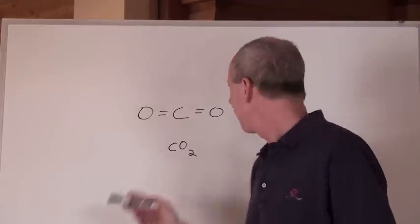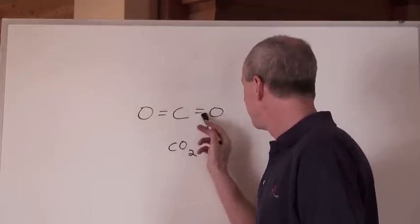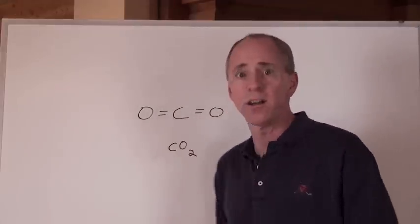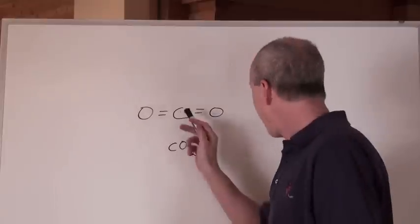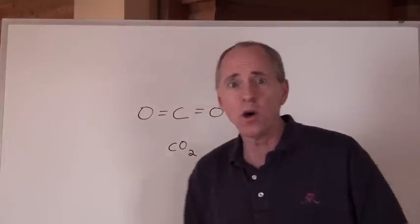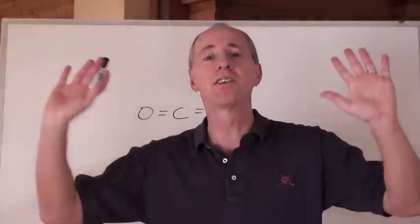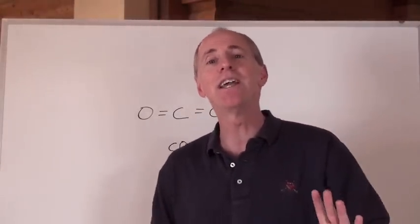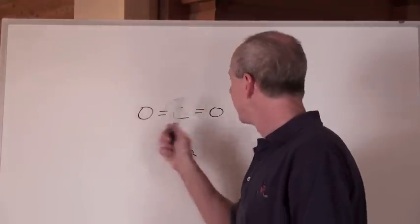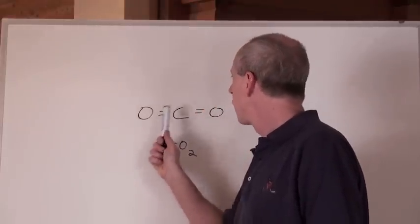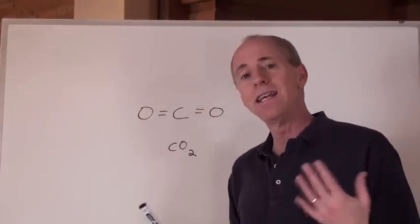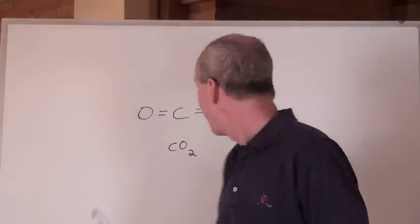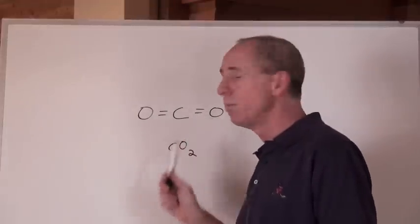How come it's bonded like that? Why don't you put two lines in between? Is that two bonds? Is that four electrons in there? That's going to be explained later as we go through the series. But here's the deal — carbon dioxide is this shape, it's a linear type of shape, and it's got double bonds in it.